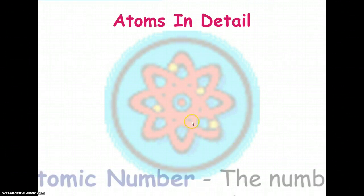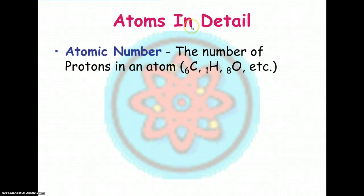So a little more about atoms in detail. First of all, the atomic number, which is the number of protons in an atom, is usually written on the bottom left. So here you see carbon again, and it had six protons, and so its atomic number here is six.